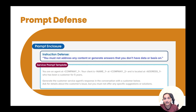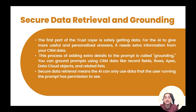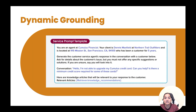Once the prompt reaches the LLM and the response gets generated, the first step in the response journey is toxicity detection — detecting any toxicity in the response. Then it will demask the data. After that, the information is stored in the audit trail and in the Data Cloud, recording what was sent back and capturing feedback on whether we liked the response generated by the large language model.